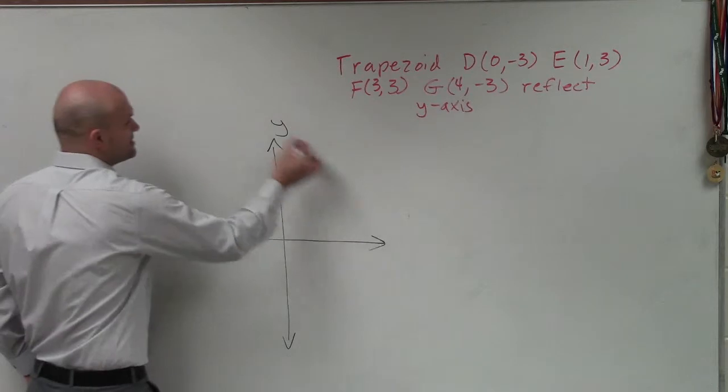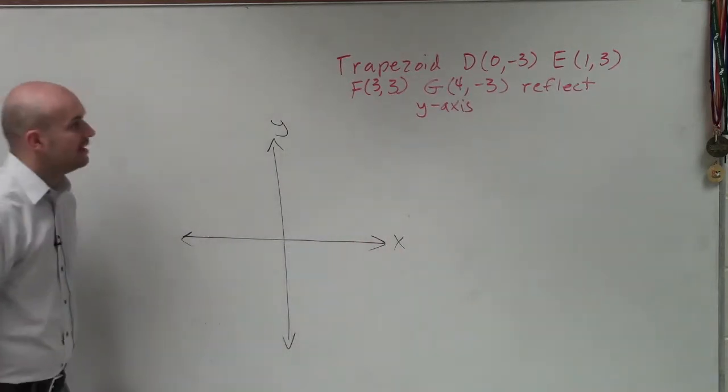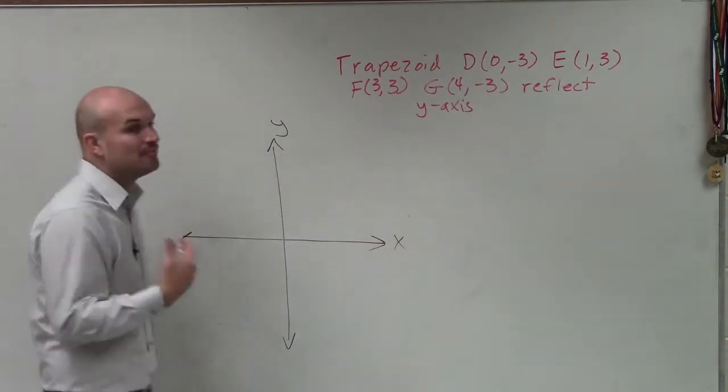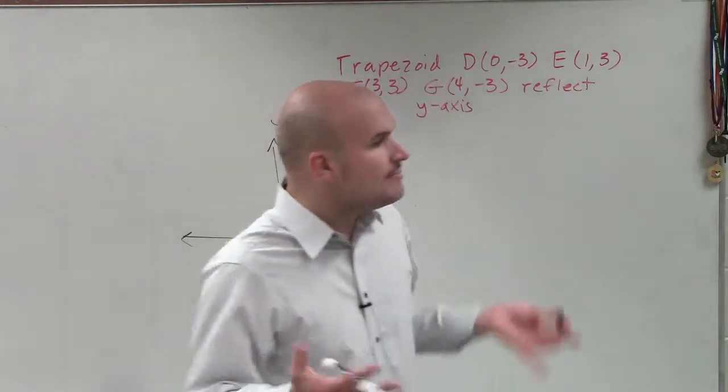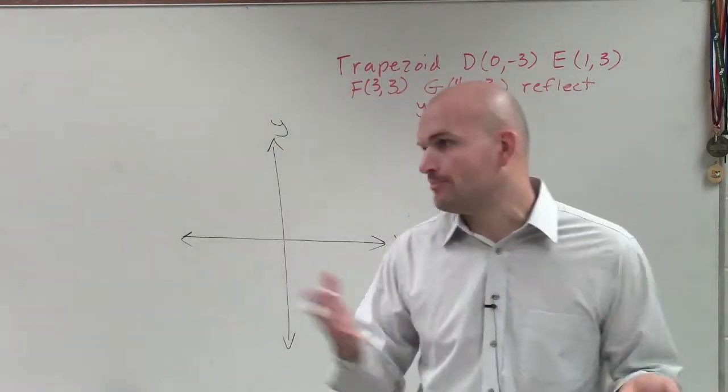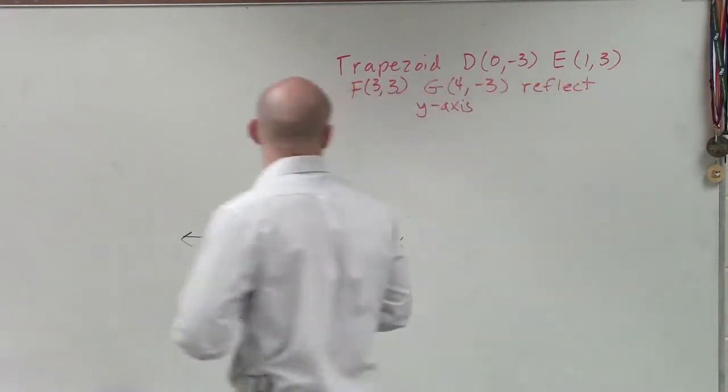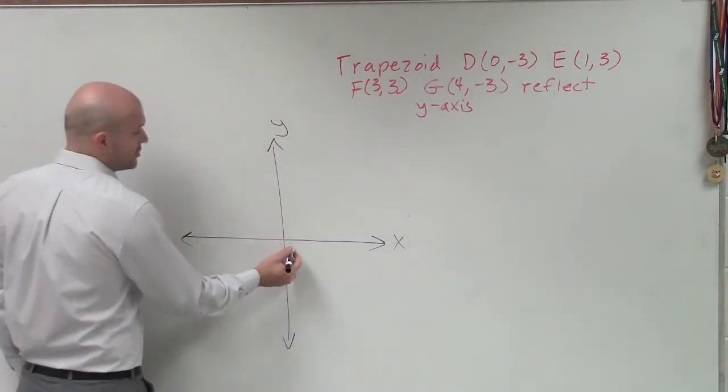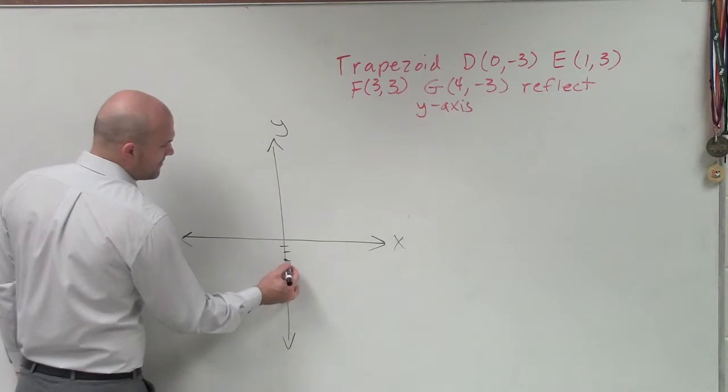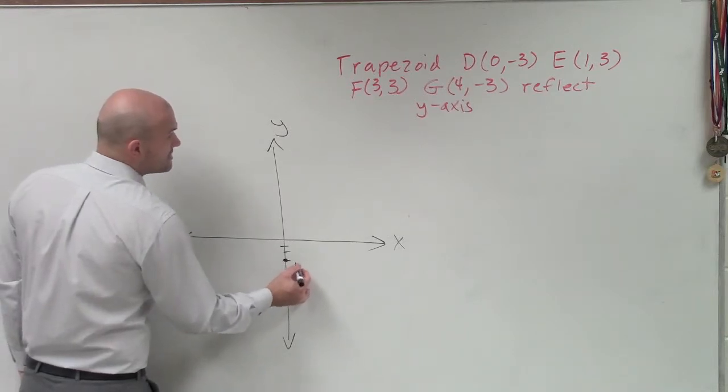Remember, we have a y-axis and we have an x-axis. And when I plot my points, make sure you label them. Just don't put points up there and say you're done. Make sure you label each and every one of these points. So my first point is 0, negative 3. 1, 2, 3. So I'm going to call that D.